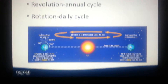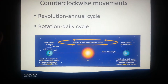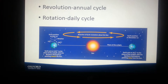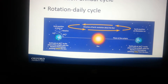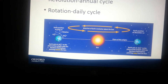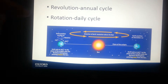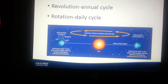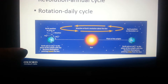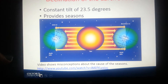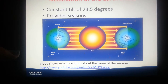Counter-clockwise movement. Revolution is the annual cycle; rotation is the daily cycle. 365.25 days is one cycle or revolution, and rotation is about twenty-four hours, giving us our days. Declination of the Earth's axis is a constant tilt of 23.5 degrees, which provides the seasons.